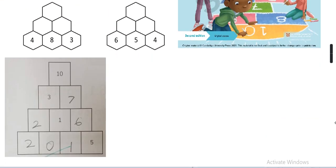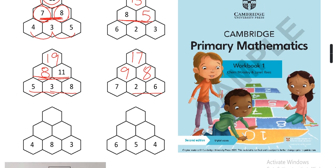After this we will do an example from the book as well. 4 plus 8 is 12, and 8 plus 3 is 11, and 12 plus 11 is 23. This one: 5 plus 5 is 10, and 5 plus 4 is 9, and 9 plus 11 is 20.